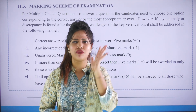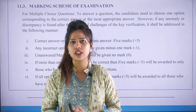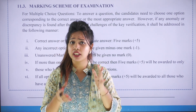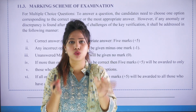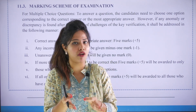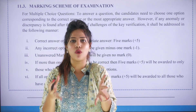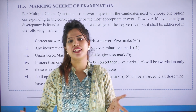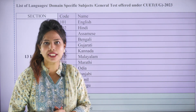For the marking scheme: five marks are awarded for every correct answer. If you incorrectly mark an option, there is a negative marking of minus one for every incorrect answer. If you leave a question unattempted and do not mark any option, no marks are deducted.